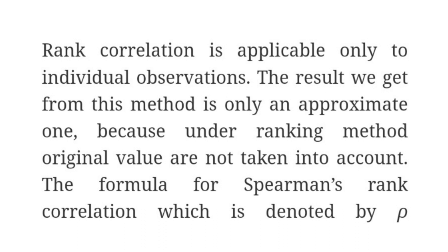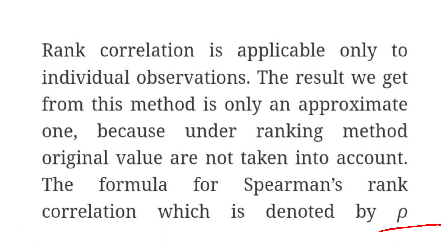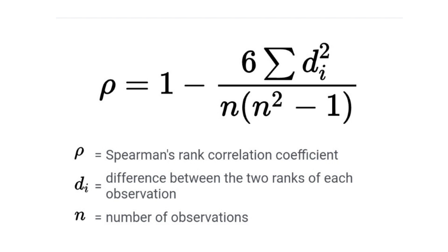The formula for Spearman's rank correlation is denoted by the symbol rho (R-H-O) — not small p, but rho. Just as Carl Pearson's correlation coefficient is denoted by small r, Spearman's rank correlation is denoted by rho. The formula is: rho equals 1 minus 6 times the summation of D squared (sigma D squared), divided by N times (N squared minus 1).